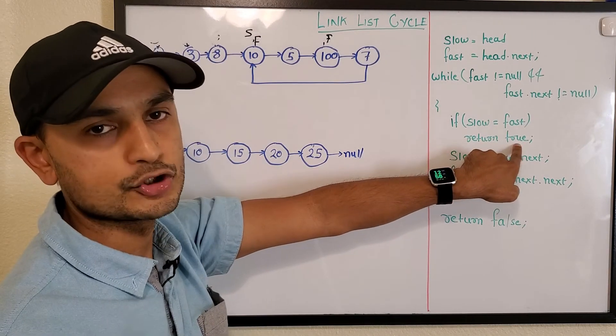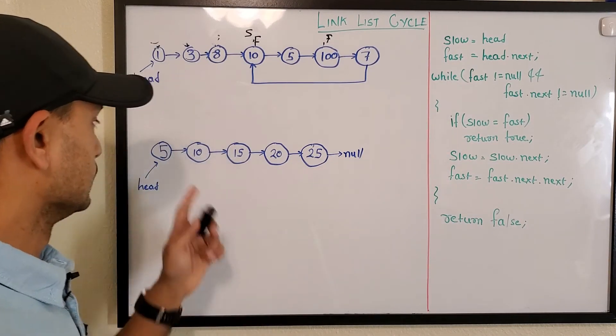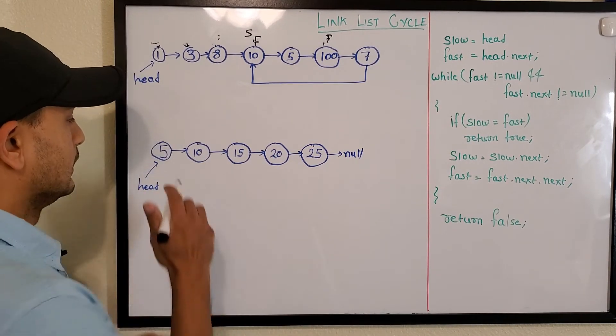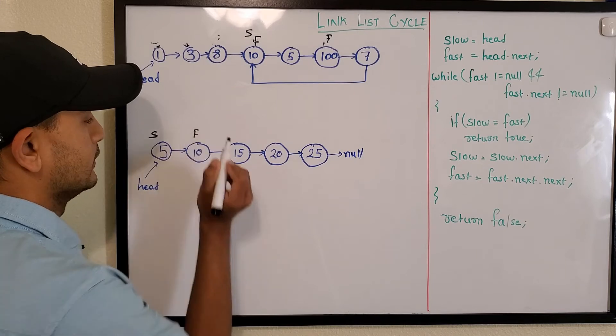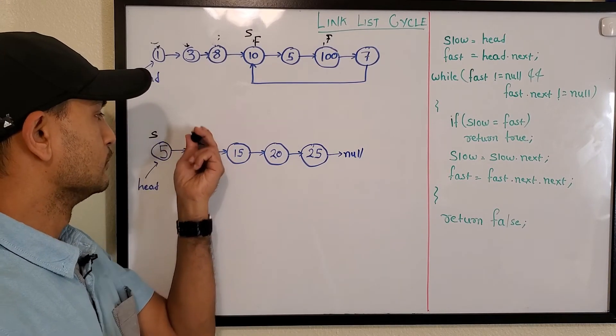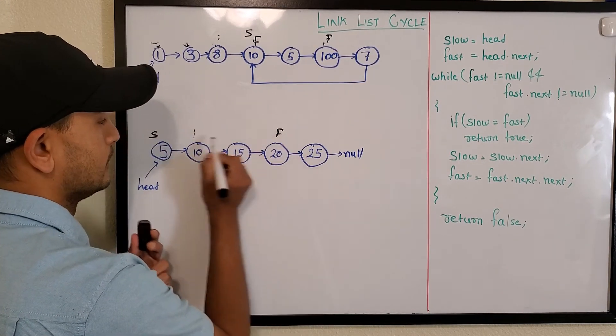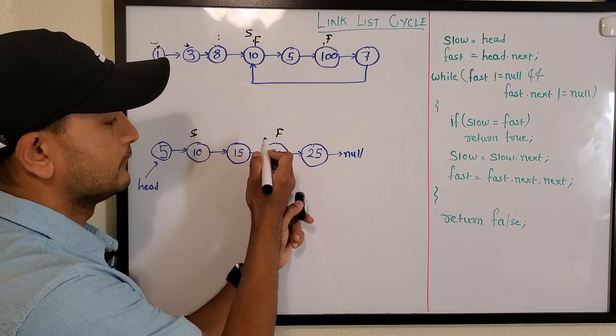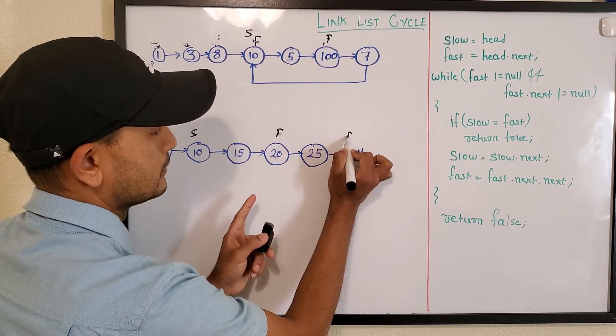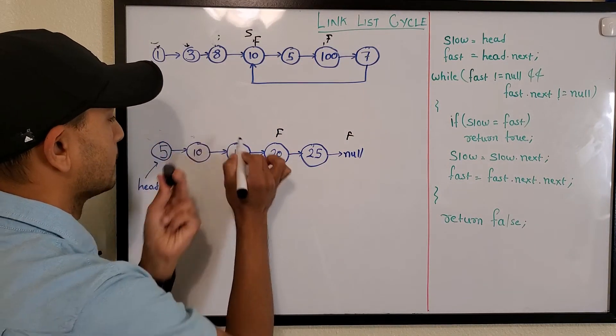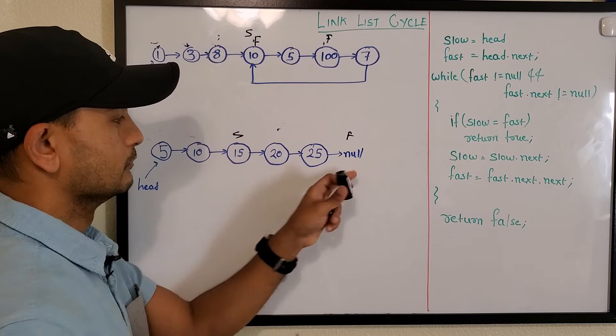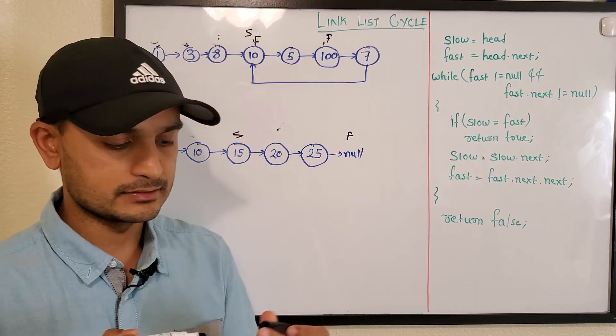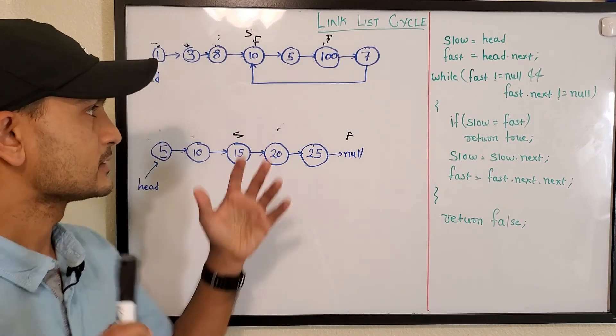Let's apply the same algorithm to this example. Our slow is here, fast is here. Fast will move two nodes, slow will move here. In the next iteration, fast will move here and slow will move here. Obviously, fast is null, so we come out of the loop and return false, saying the linked list doesn't have a cycle.